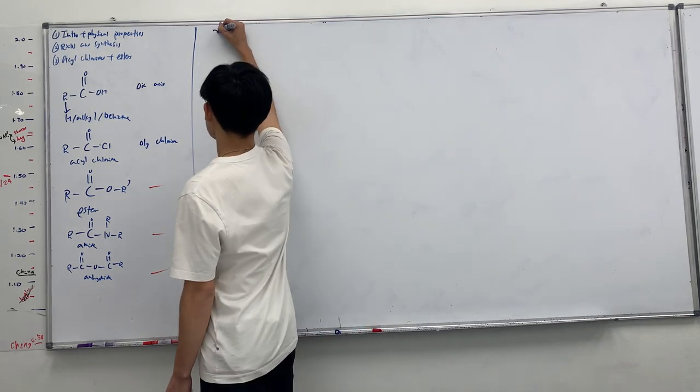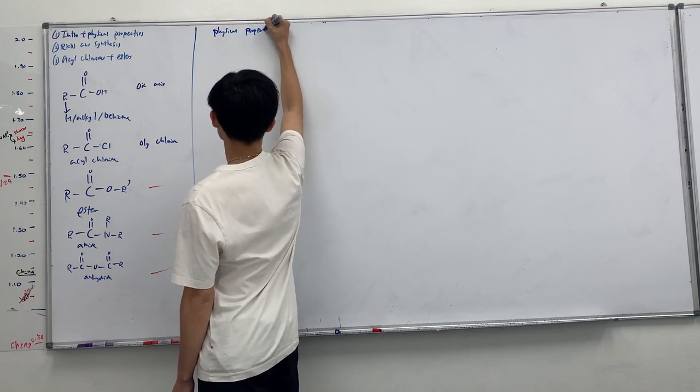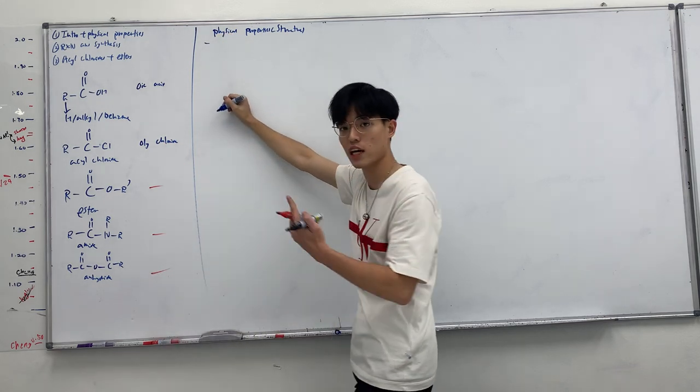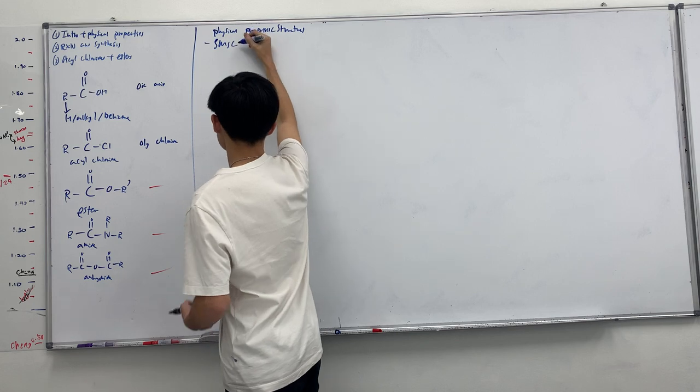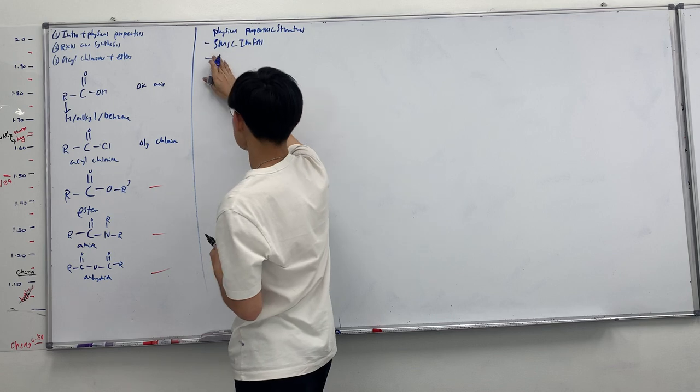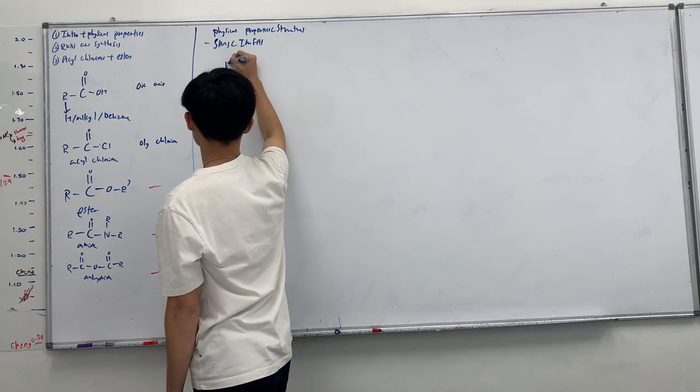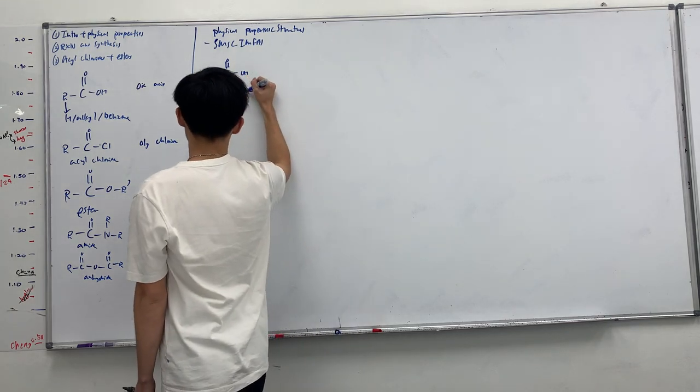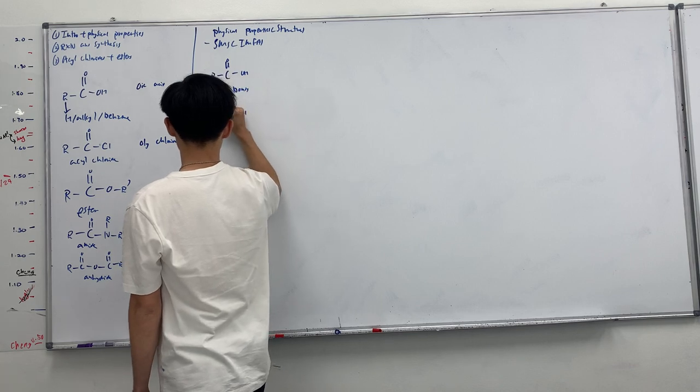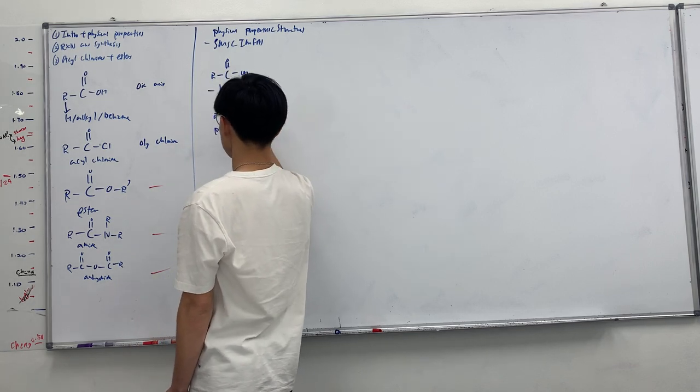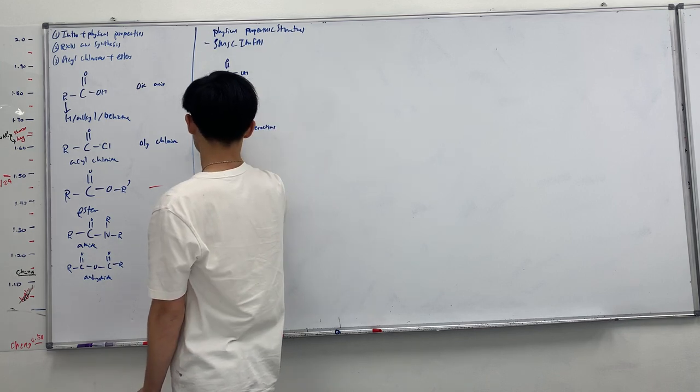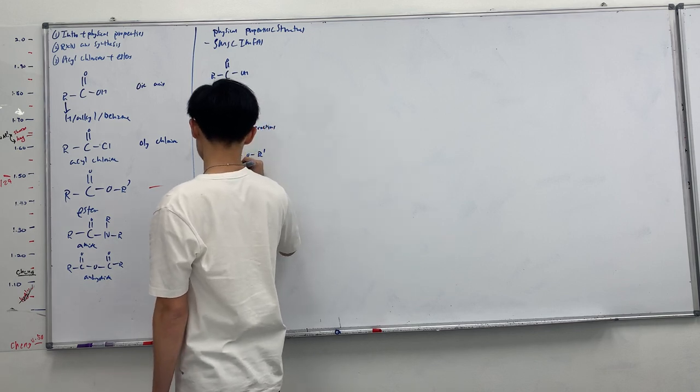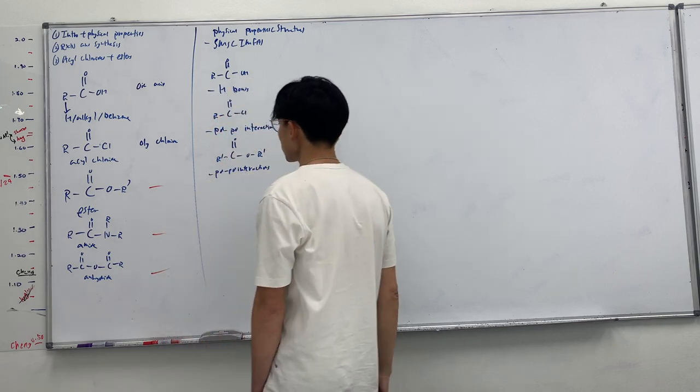After this we're moving on to the next part which is physical properties. Whenever you see physical properties, it's actually just talking about your structure. And 95% of your structures in organic chemistry is intermolecular forces. Whenever you see this, you want to think of IMFA. It's physical properties, and I am F.